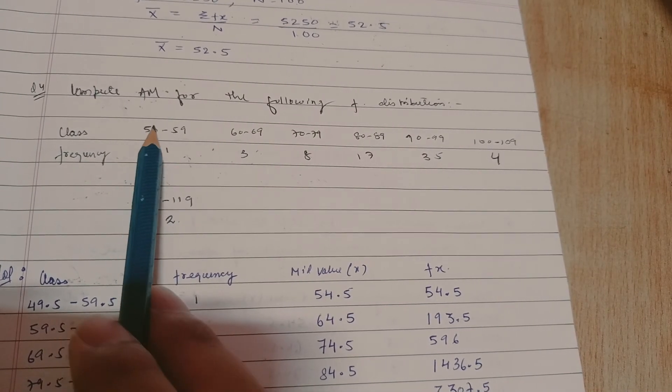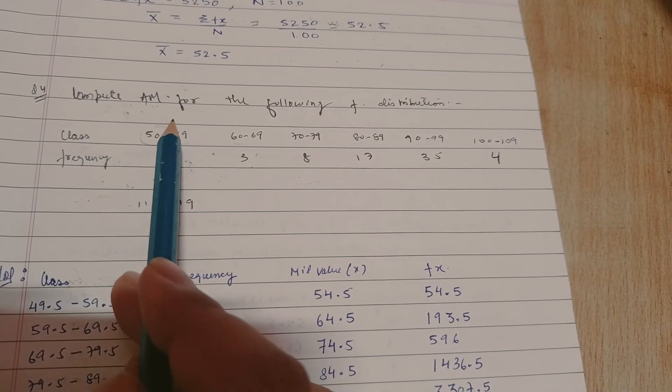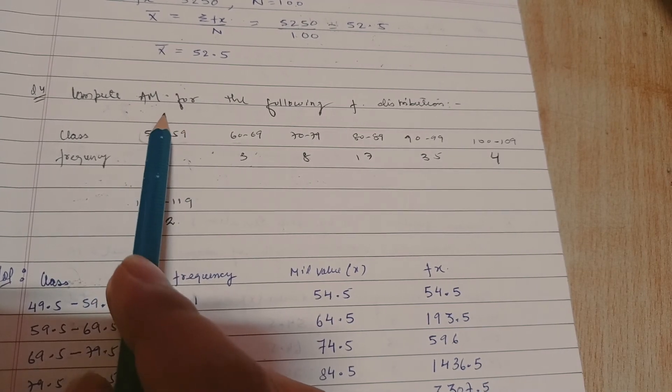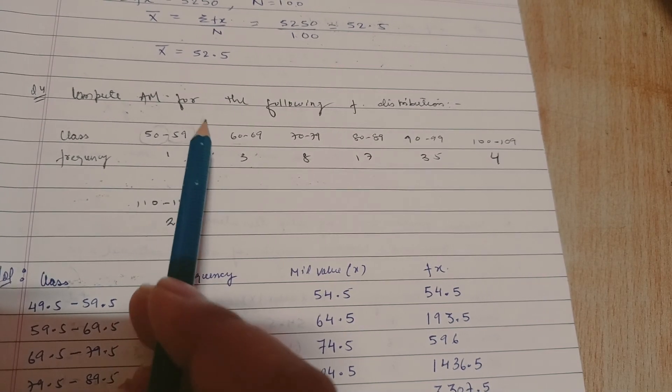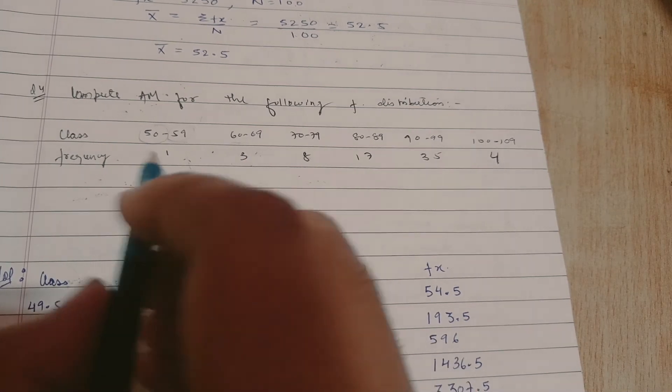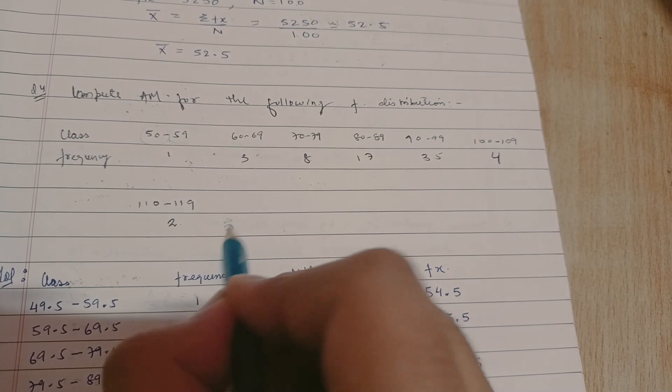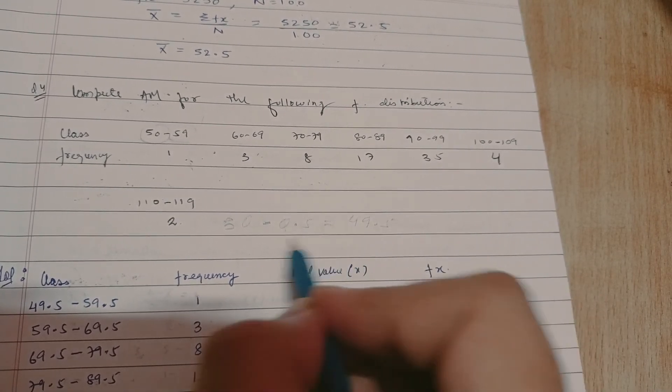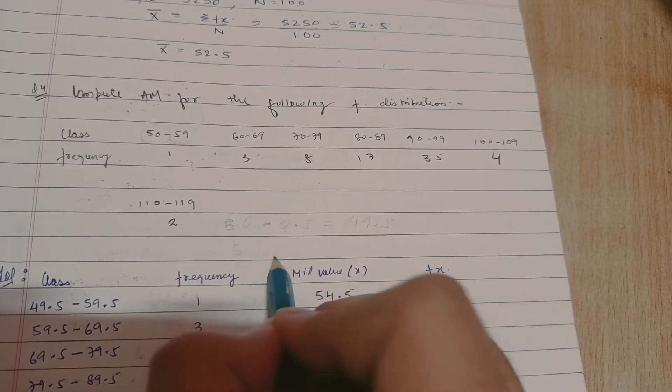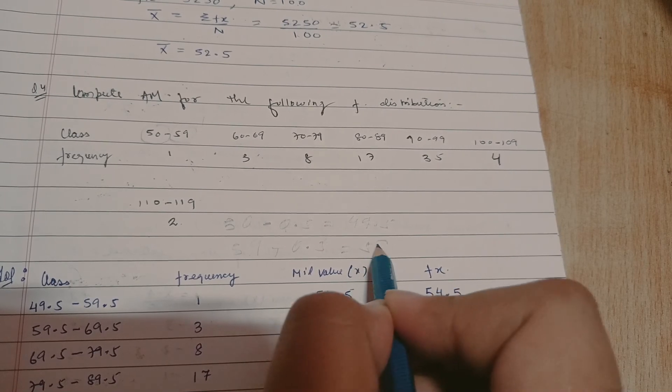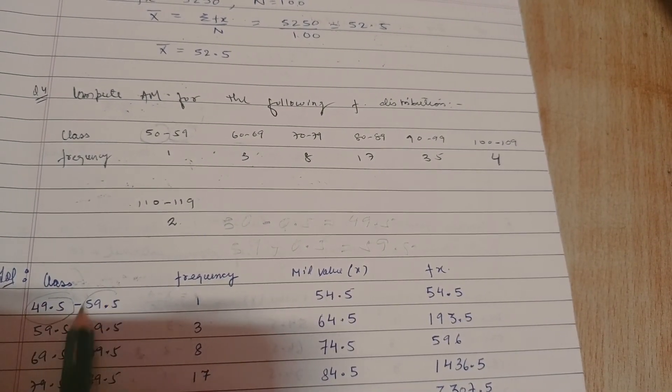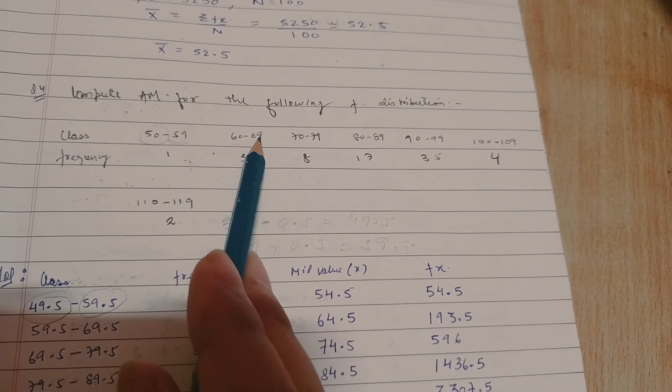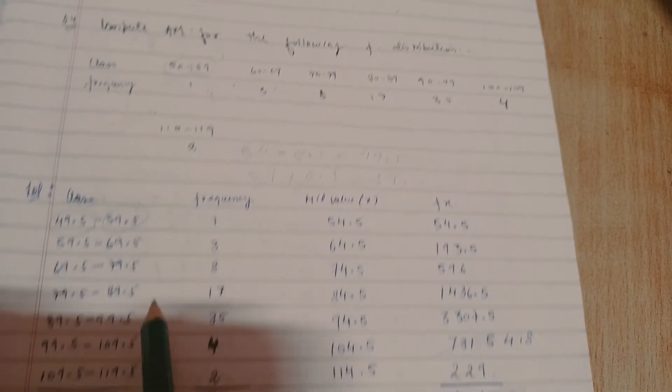So what we will do is from the lower value of the class we would subtract 0.5 and from the upper value of the class we will add 0.5. Like for this class, 50 minus 0.5 would be 49.5 and 59 plus 0.5 would be 59.5. Likewise, 60 minus 0.5 is 59.5 and 69 plus 0.5 would be 69.5. This is how we will reconstruct the classes.